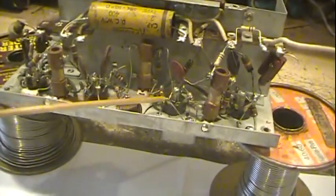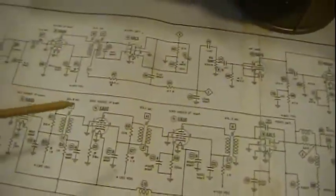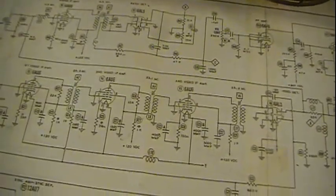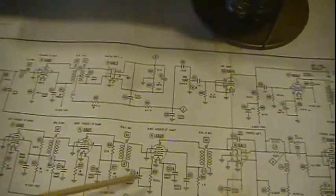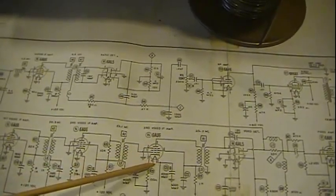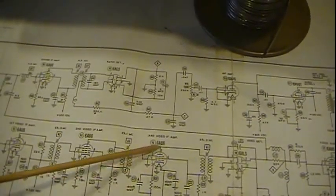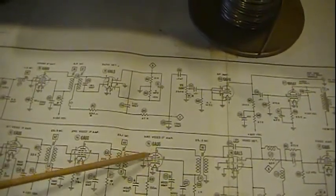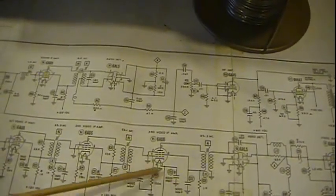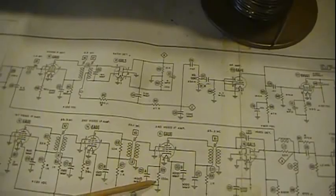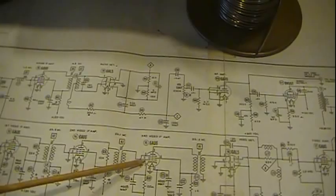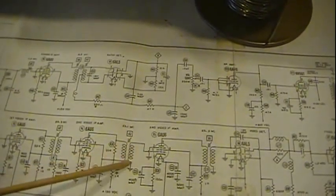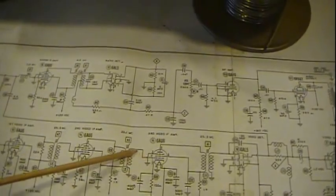Now the biggest thing that I want you to really get from this is in locating your parts, the main thing is the importance of the pin numbers on the tubes. If your schematic doesn't have them, look them up, get them, put them on here. Because once you've located these, then it's not so hard to start following out and trying to find the parts and where they're at.